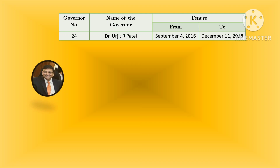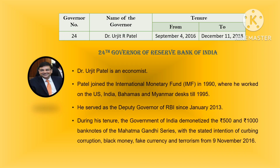The twenty-fourth governor was Dr. Urjit Patel. He served as governor from September 4, 2016 till December 11, 2018. He was an economist who joined the IMF in 1990 and worked on US, India, Bahamas, and Myanmar desks till 1995. He then served as deputy governor of RBI since January 2013. During his tenure, the government of India demonetized the Rs.500 and Rs.1000 banknotes of the Mahatma Gandhi series with the stated intention of curbing corruption, black money, fake currency, and terrorism.